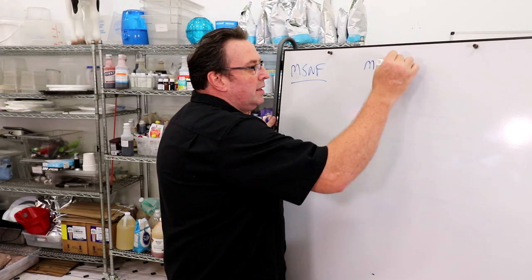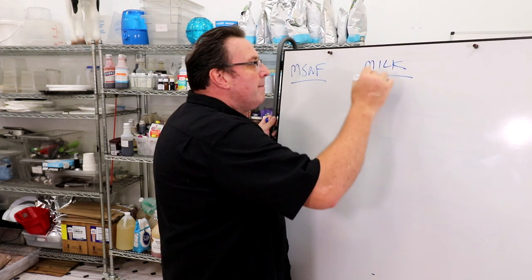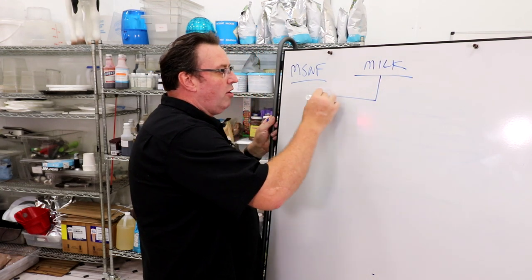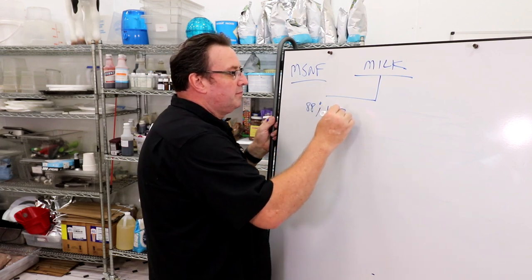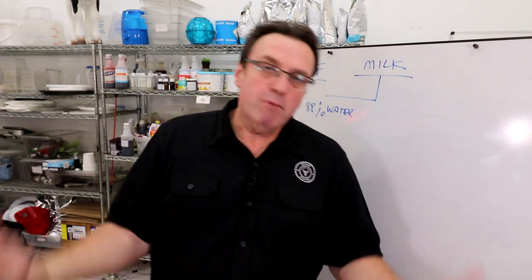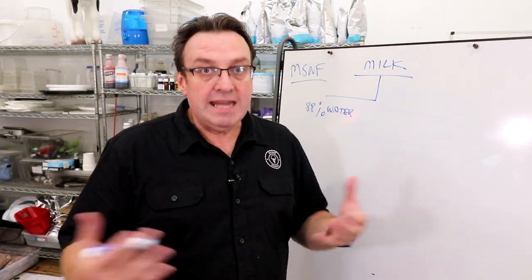We start with our milk, it's the building block. Now milk, when it comes out of the cow, is 88 percent water. Would you believe it? So what you're drinking for the most part in a gallon of milk is 88 percent water.